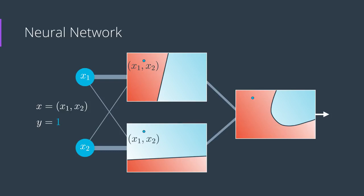And the outputs coming out will be a small number from the top model since the point lies in the red area, which means it has a small probability of being blue, and a large number from the second model since the point lies in the blue area, which means it has a large probability of being blue.